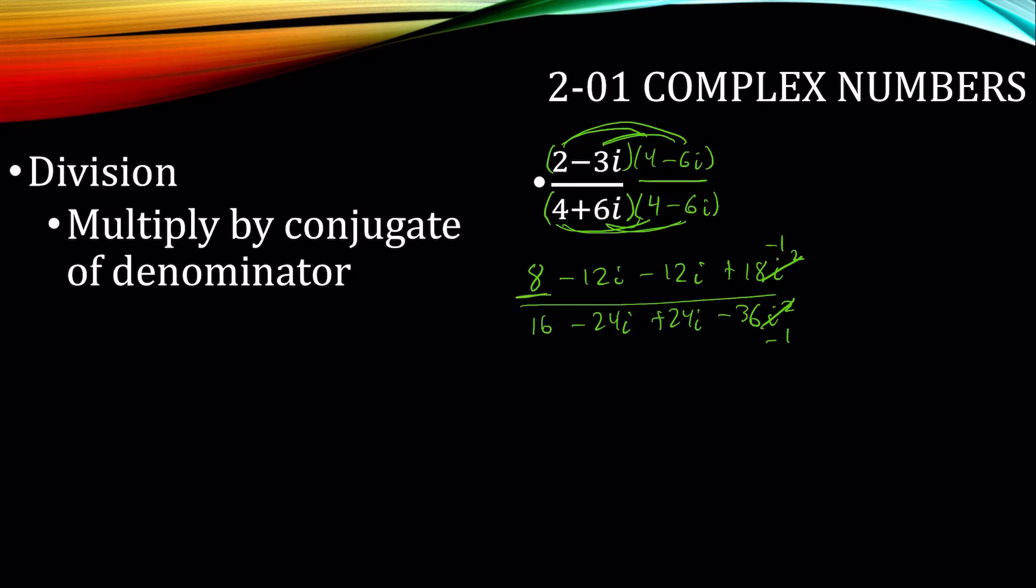Combining things, I have 8. That would be negative 18. And then negative 24i on the top. The bottom, that cancels out to nothing. I have 16. This would become a plus 36. 16 plus 36 is 52.